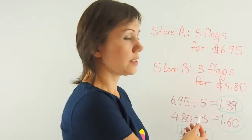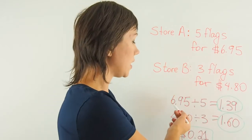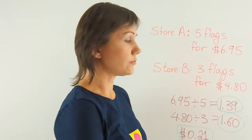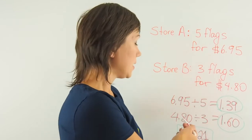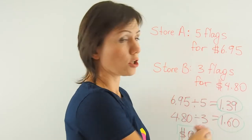So in order for me to find out how much I need to pay for one flag in store A, I need to divide $6.95 by 5 and that is $1.39. In store B it's $1.60. I divided $4.80 by 3.